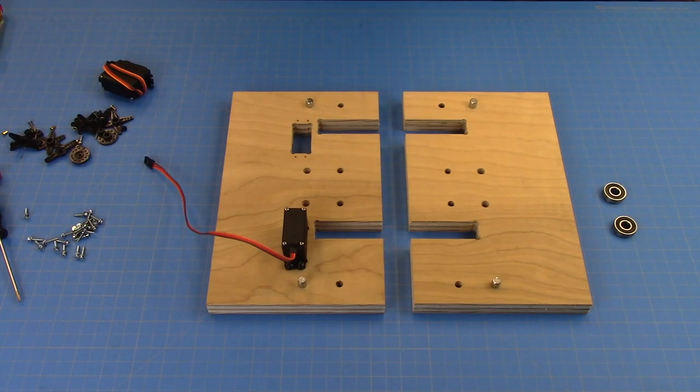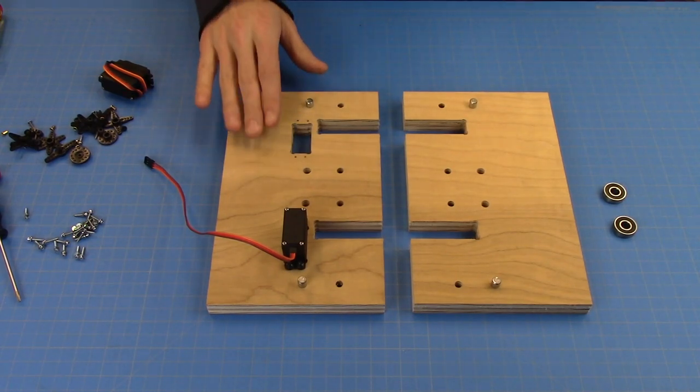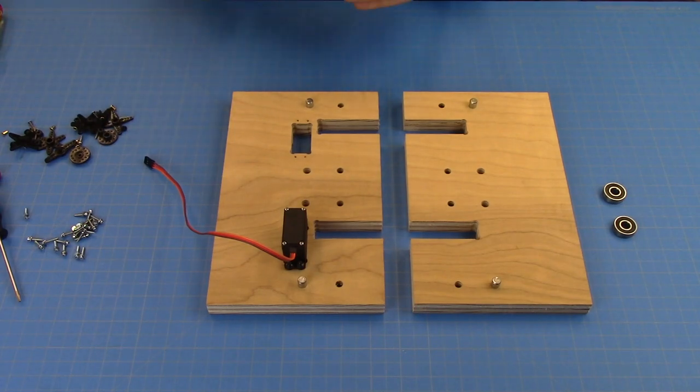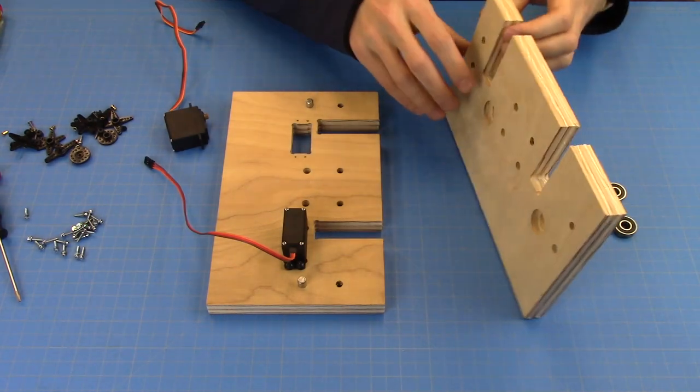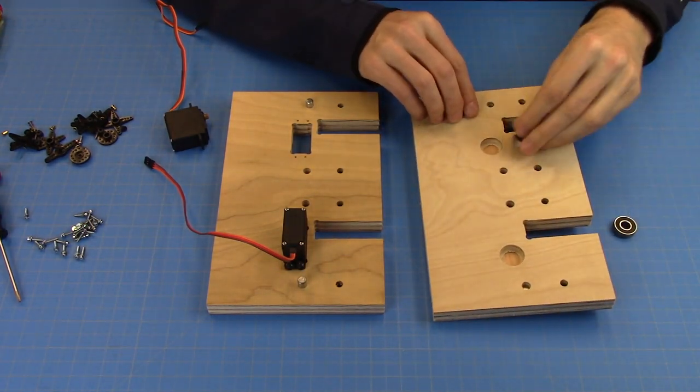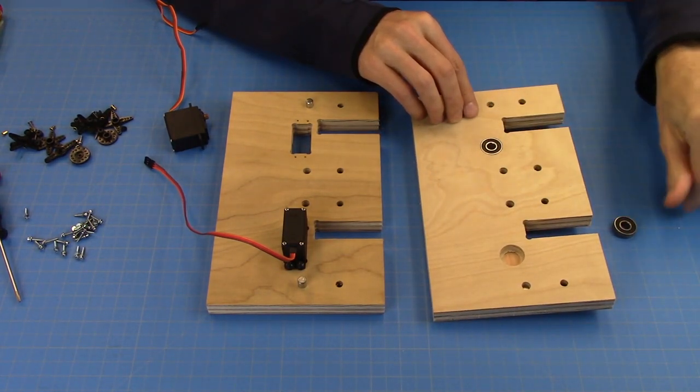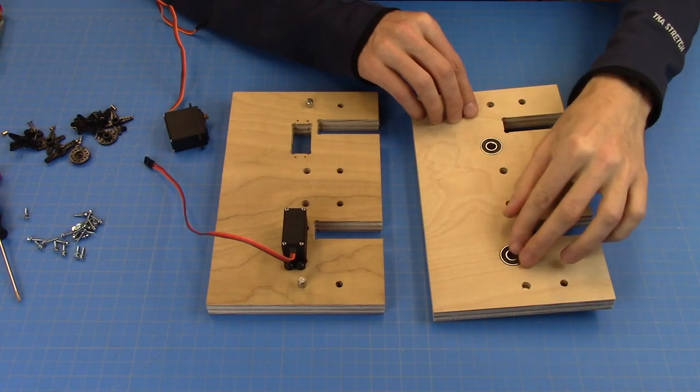So that brings us to my latest prototype which is simplified quite a bit. It is a single piece of plywood on each side. This side has the servos. The other side is just going to get a roller skate ball bearing to hold the other side of the flap in place.